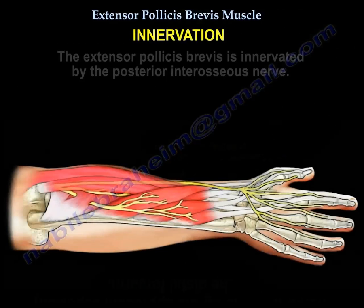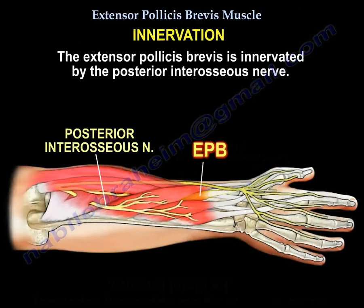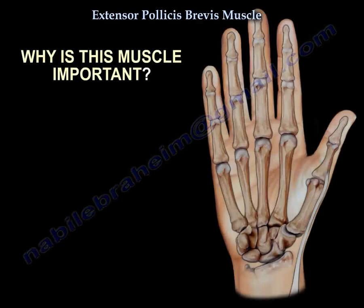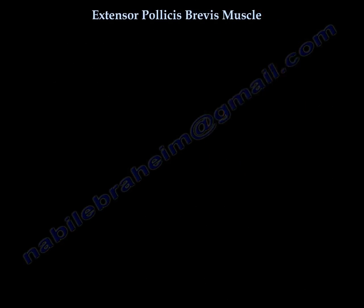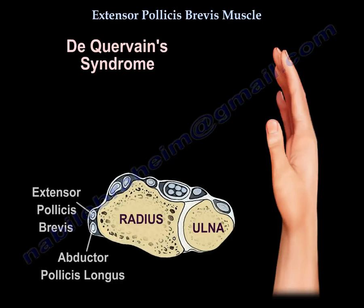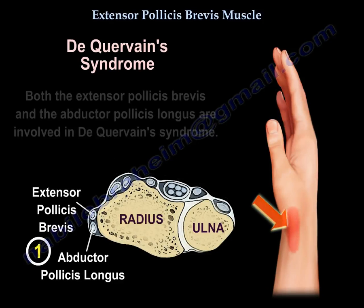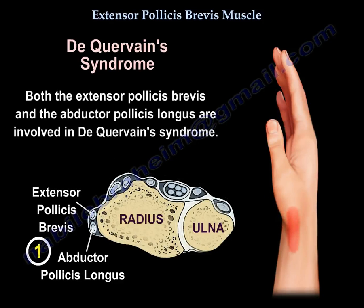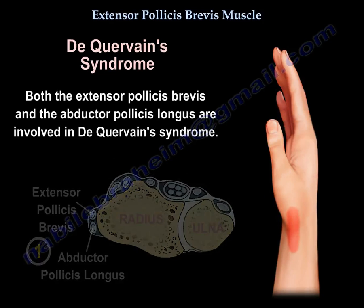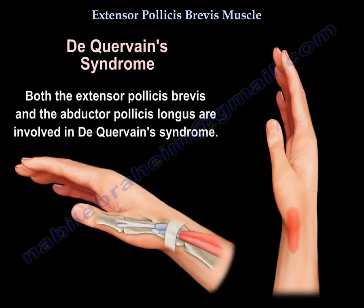Innervation by the posterior interosseous nerve, which is part of the radial nerve. The extensor pollicis brevis is important because it is part of De Quervain's tenosynovitis. Extensor tendons are arranged into six compartments at the wrist. The abductor pollicis longus and extensor pollicis brevis are located in the first extensor compartment of the wrist and are involved in De Quervain's syndrome.